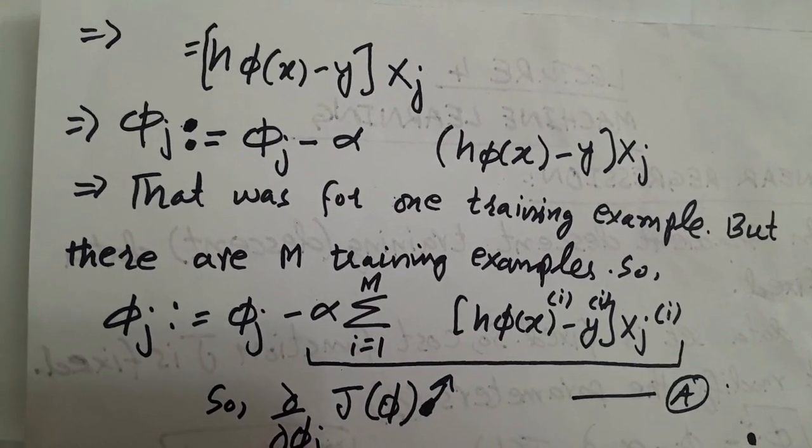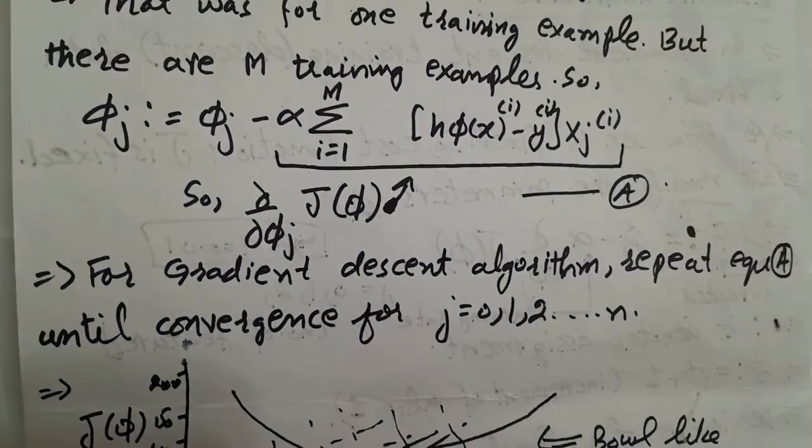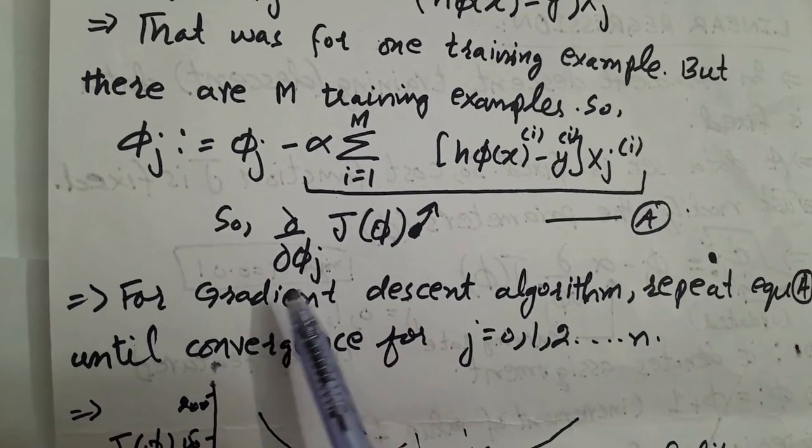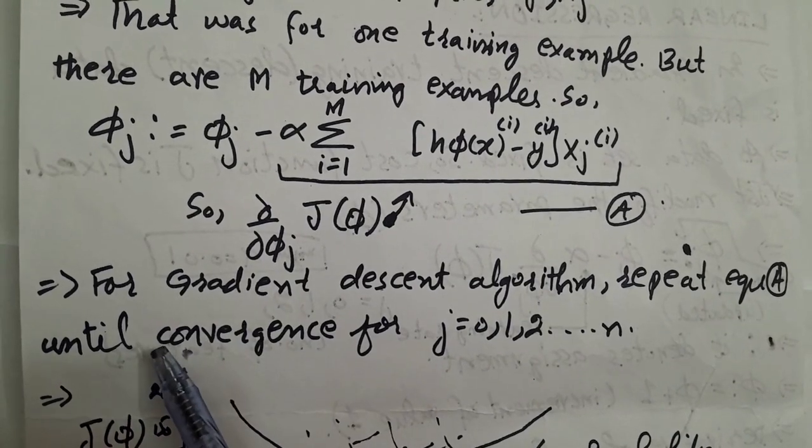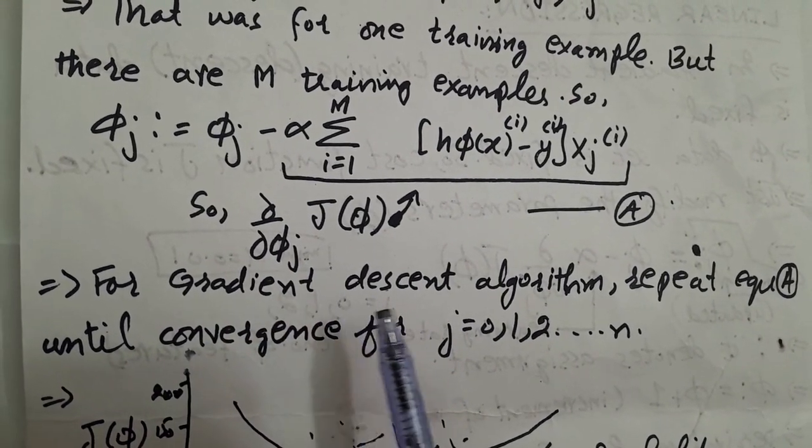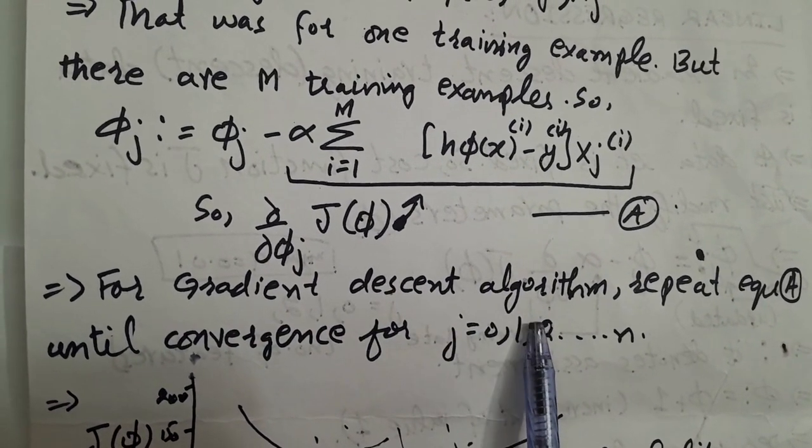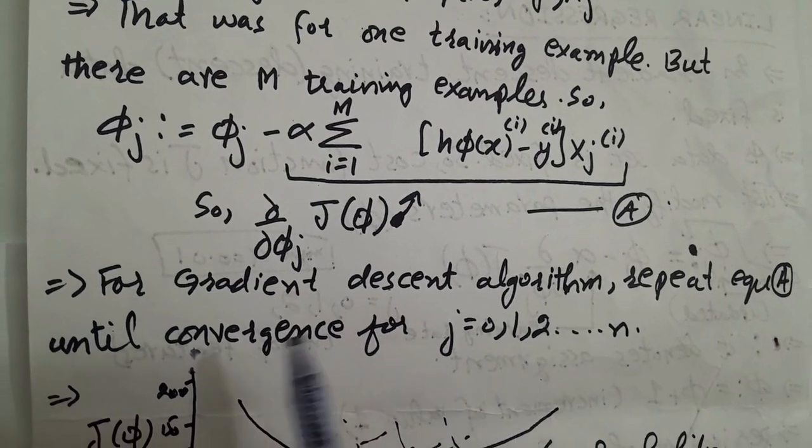Now, this is equation A for the gradient descent algorithm. Repeat equation A until you get convergence for j is equal to 0, 1, 2 till n, the number of features.